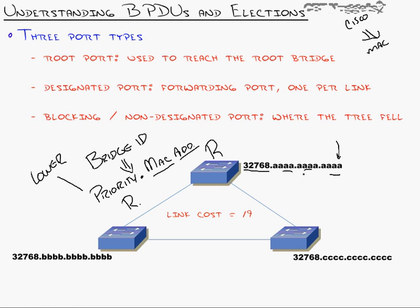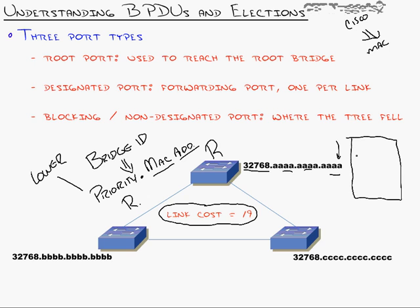There is a link cost table — a 100-megabit-per-second link has a Spanning Tree cost of 19, while a 10-megabit link has a cost of 100. All the switches in the network try to find the best, lowest-cost path to reach the root bridge. If all links are 100 Mbps, they're all a cost of 19 and each switch picks the most direct route. The root bridge port on each switch — its root port — is the one with the lowest cost path to reach the root.